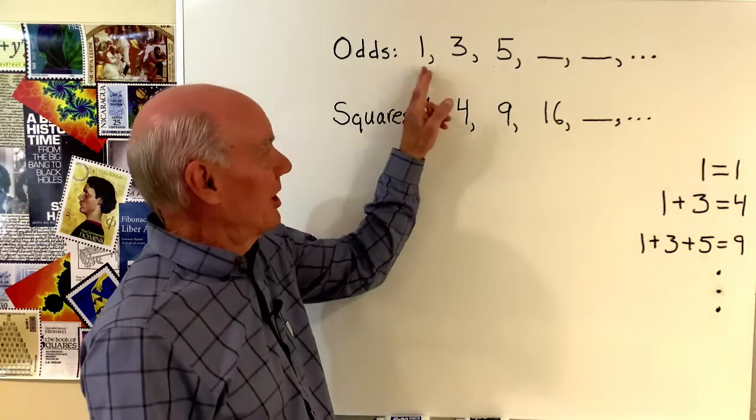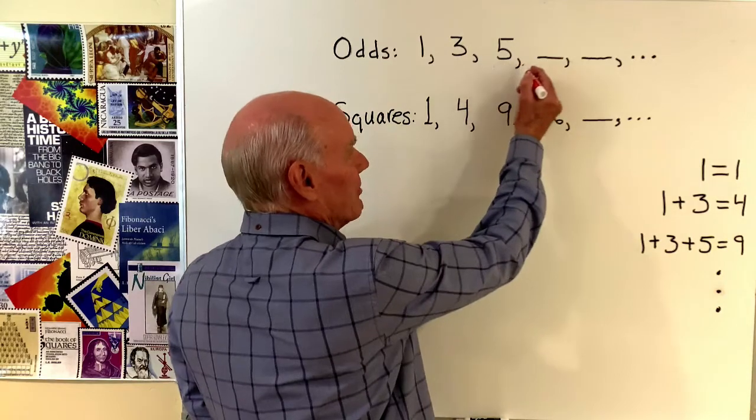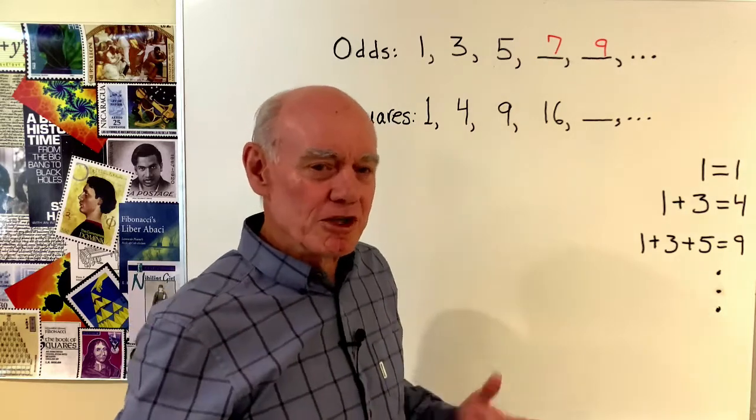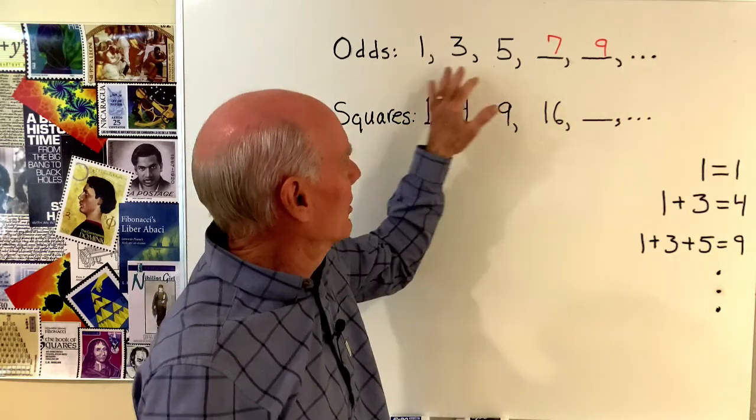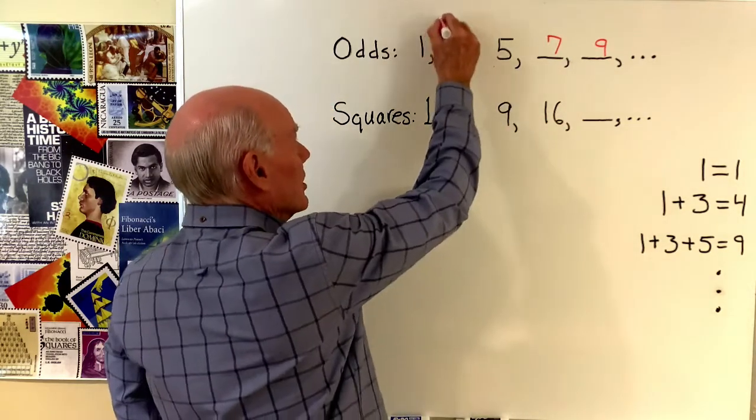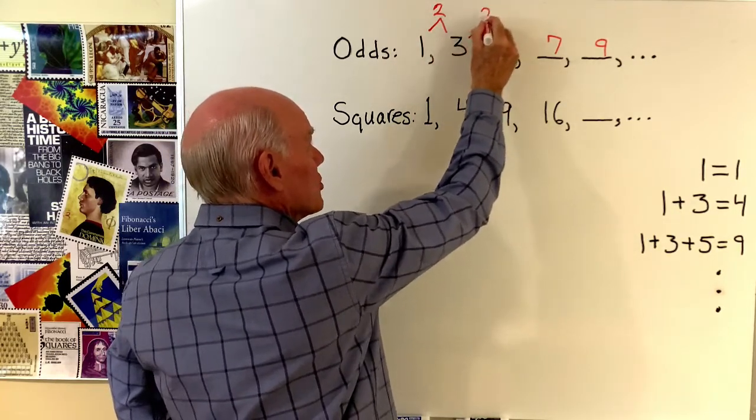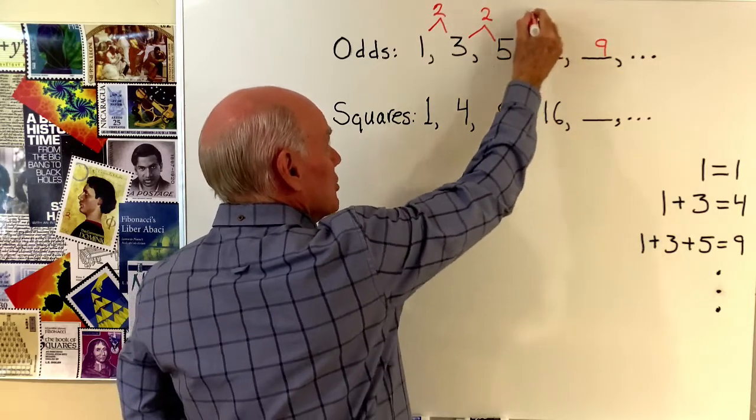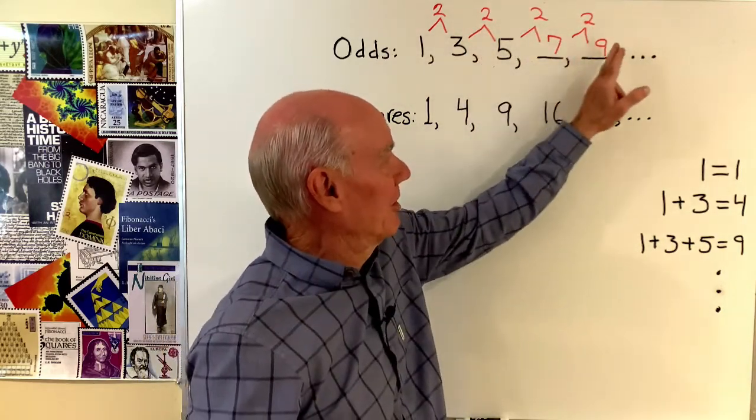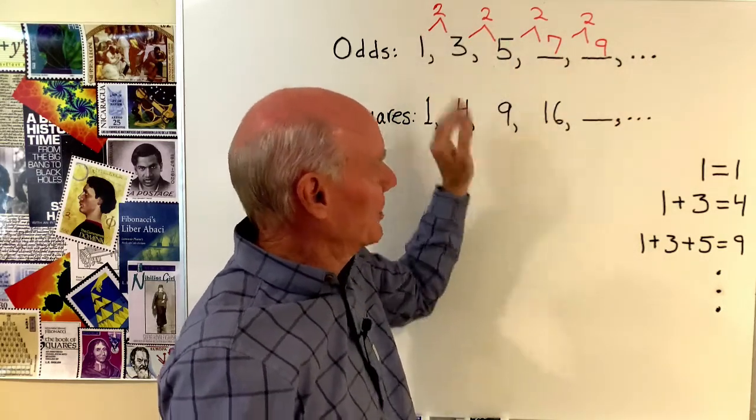So the very first thing we want to do is say to ourselves things like, I don't understand this yet, instead of saying I'll never understand this. So that's the first thing. Okay, let's go back to the sequence of odd numbers here. Most people don't have much trouble getting the first number after five. So that would be seven, that would be nine, so on and so forth. But if you didn't, you could look at it and say, what is going on here? These differ by two. Let's write that down. So I'm going to say three subtract one is two. Five subtract three is two. Seven subtract five is two. Nine subtract seven is two. And so if I continue that pattern, I know that I'd add two to nine to get the next number.